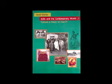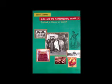Robespierre's government issued laws placing a maximum ceiling on wages and prices. Meat and bread were rationed. Peasants were forced to transport their grain to the cities and sell it at prices fixed by the government. The use of more expensive white flour was forbidden. All citizens were required to eat the pain de l'égalité — equality bread, a loaf made of whole wheat. Equality was also sought to be practiced through forms of speech and address: instead of the traditional 'monsieur' and 'madame,' all French men and women were henceforth 'citoyen' and 'citoyenne.' Churches were shut down and their buildings converted into barracks or offices. Finally, Robespierre was convicted by a court in July 1794, arrested and on the next day sent to the guillotine.